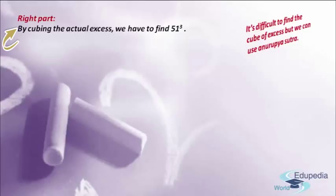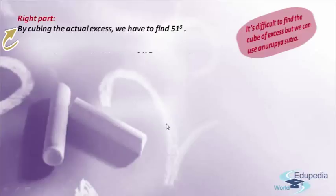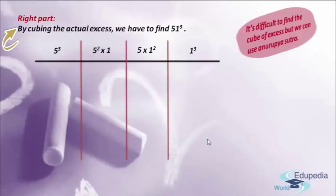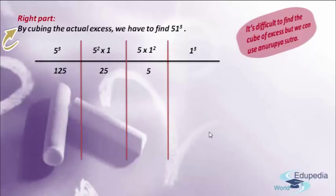When applying Anurupena Sutra, we first write the two digits in the following way: 5 cubed, 5 squared into 1, 5 into 1 squared, and 1 cubed. Now let me place some horizontal and vertical bars. Writing all the answers below the horizontal bar: 5 cubed gives 125; 5 squared into 1 gives 25 times 1, which equals 25; 5 into 1 squared gives 5 into 1, which equals 5; and 1 cubed gives 1.